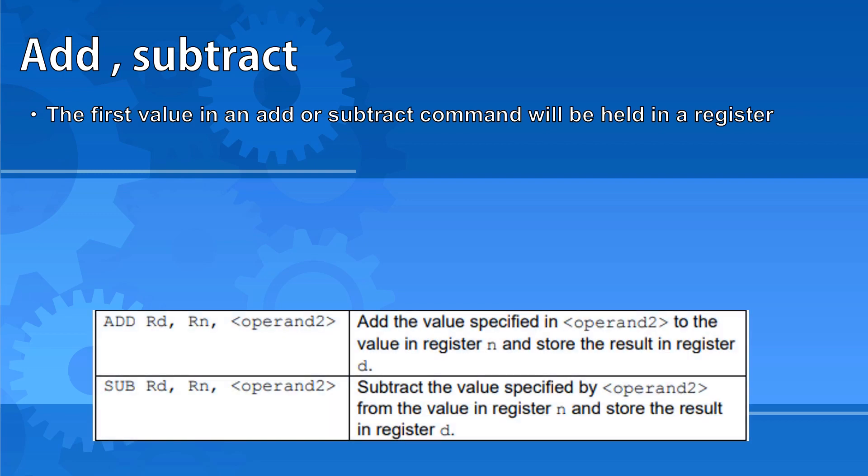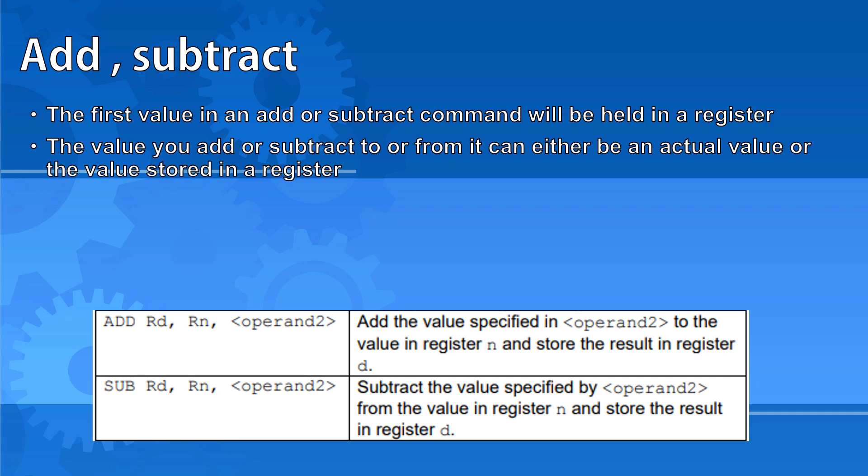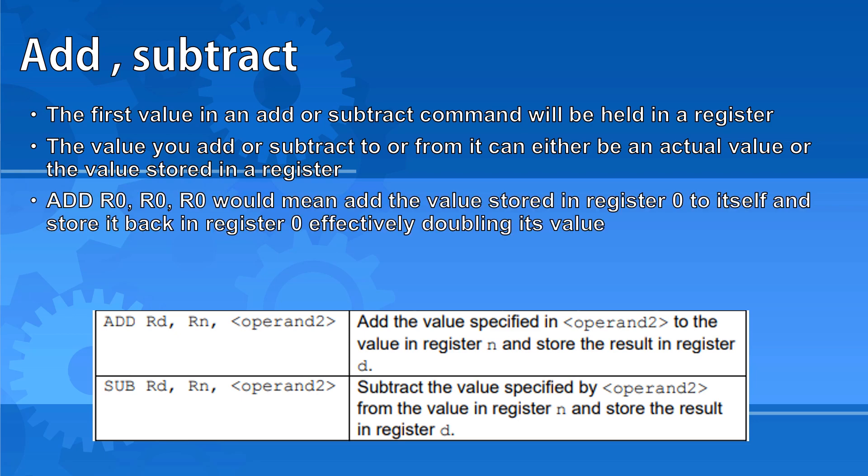The first value you specify in an add or subtract command will be held in a register. The value that you add or subtract to or from it can either be an actual value or the value stored in a register. This is because it refers to an operand. Therefore, the command ADD R0, R0, R0, which is a perfectly valid command, would mean add the value stored in register 0 to the value that's stored in register 0, so itself, and store it back in register 0. This would effectively double its value.